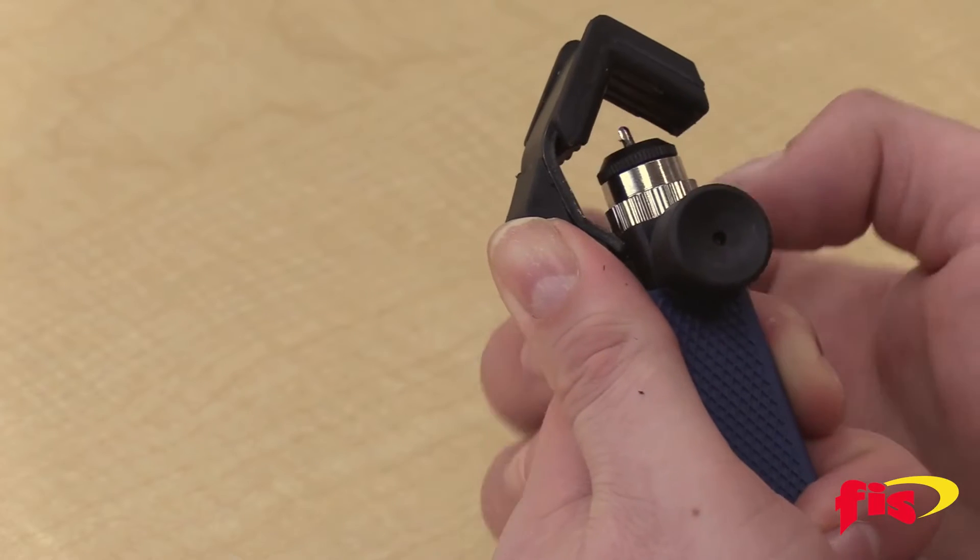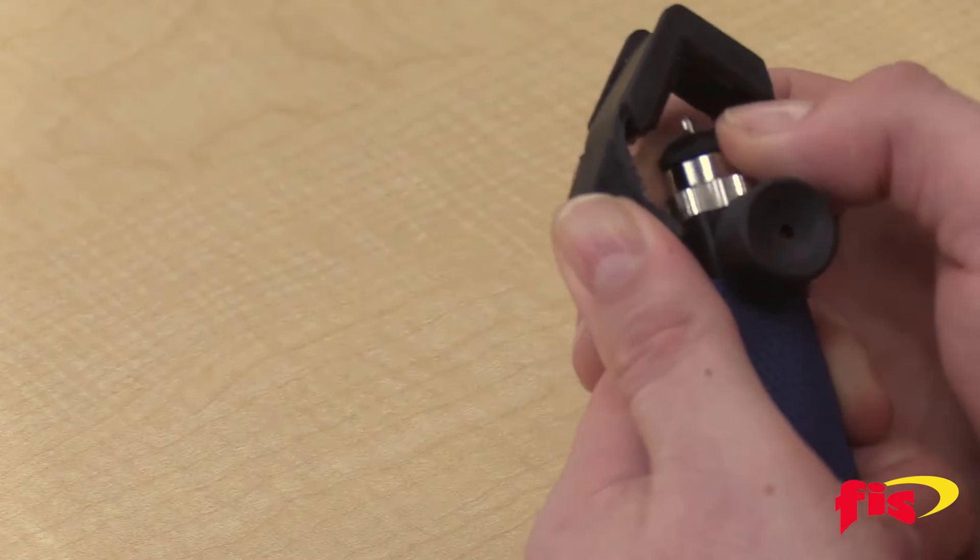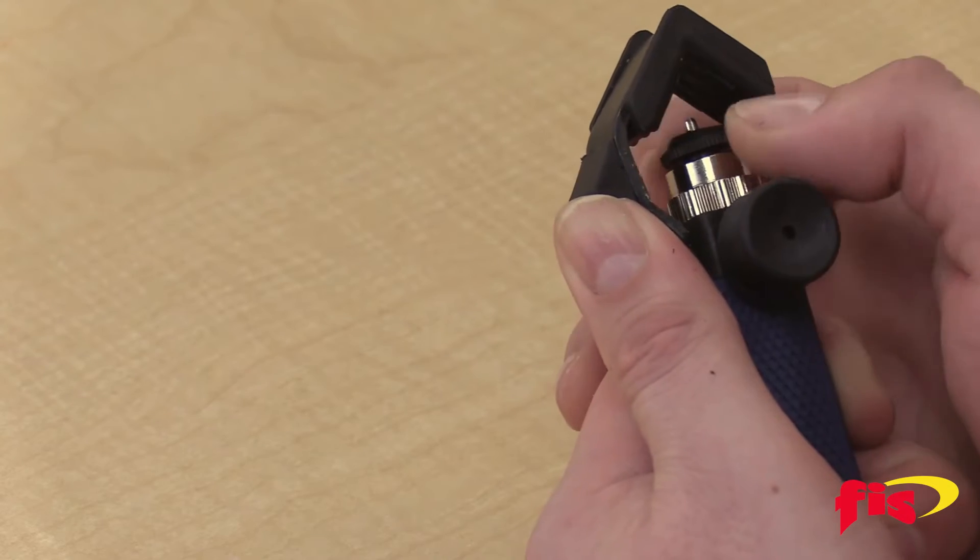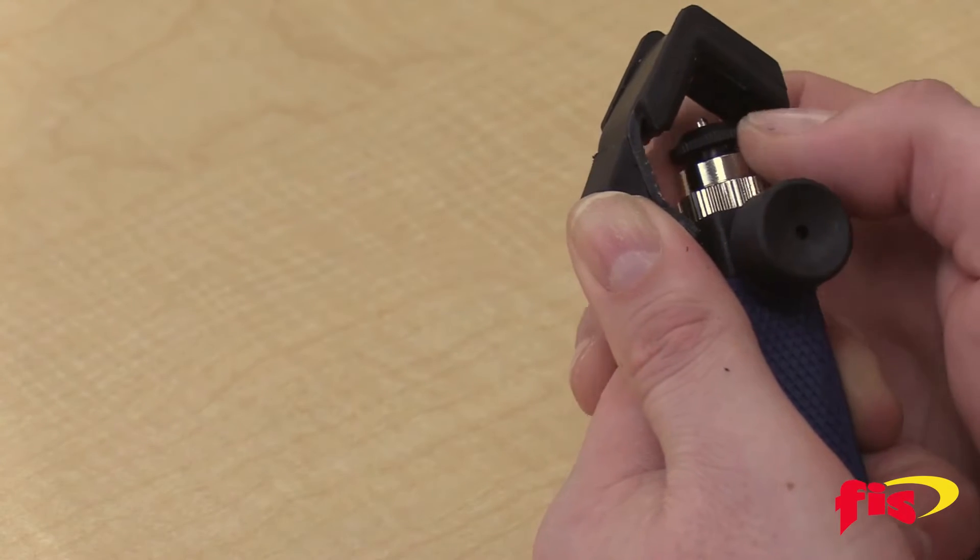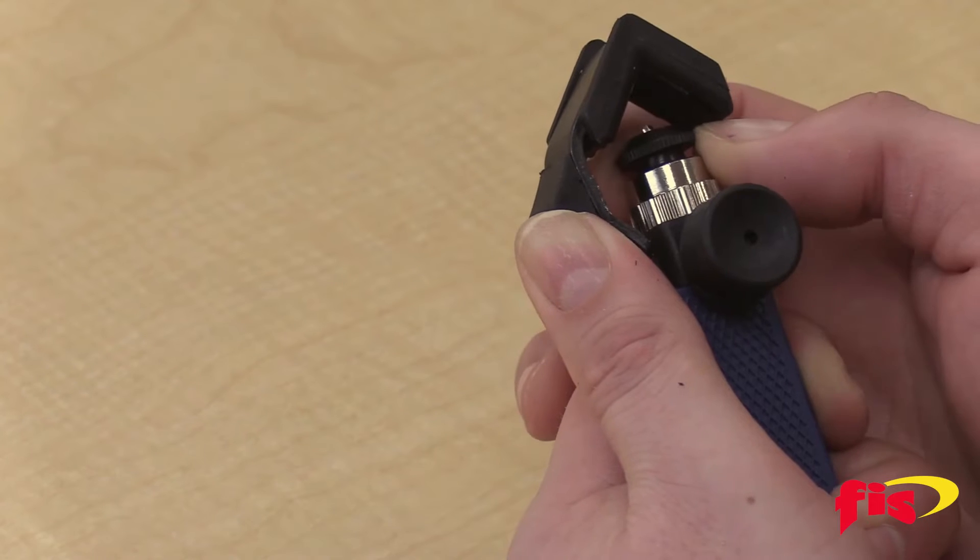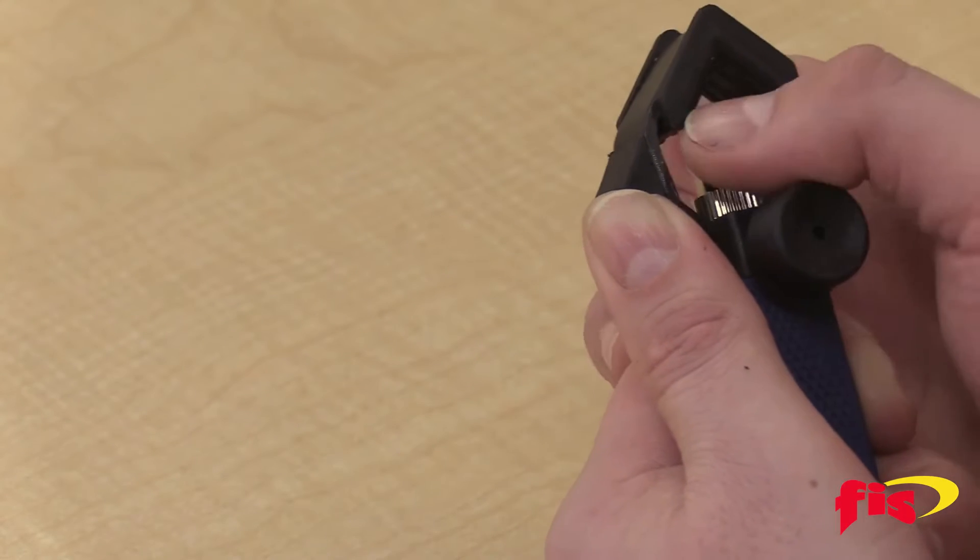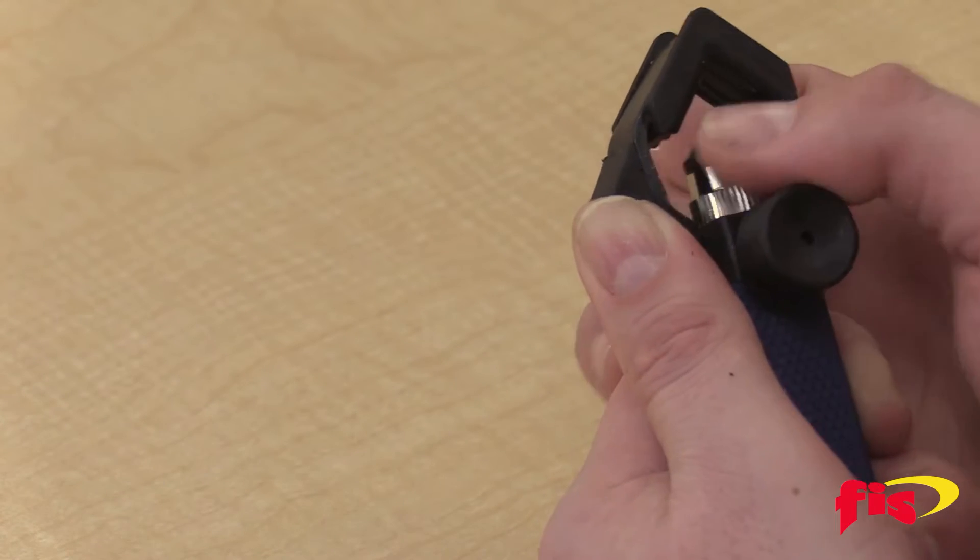To adjust the height of the blade, you simply turn this knuckle screw clockwise or counterclockwise to expose just a small part of the blade or a larger part of the blade.